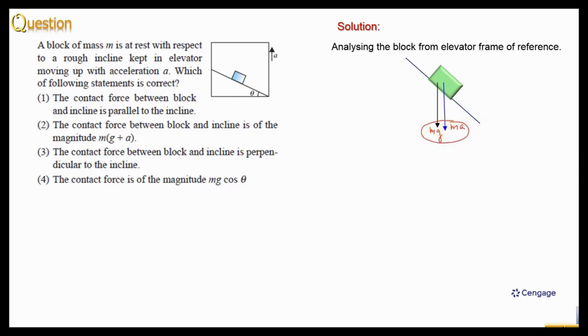We can make the component of mg plus a parallel to the incline and perpendicular to the incline. So this is the component mg plus a sin theta and mg plus a cos theta.